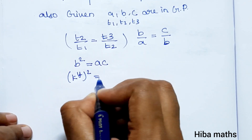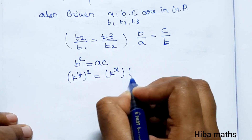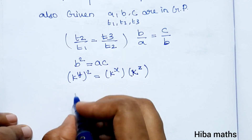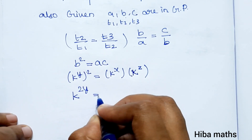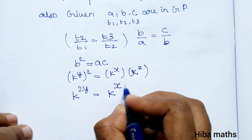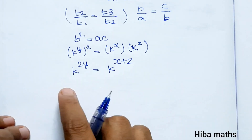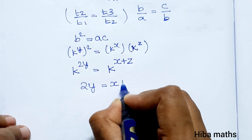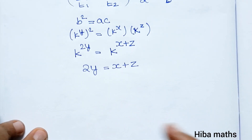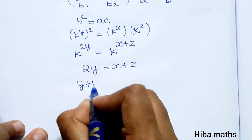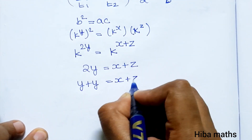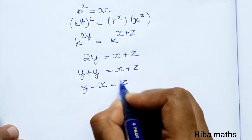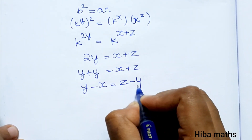Now substituting the k values: (k power y) whole square equals k power x times k power z. So k power 2y equals k power (x plus z). Since the base is the same, the powers are equal, therefore 2y equals x plus z.